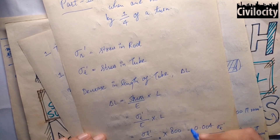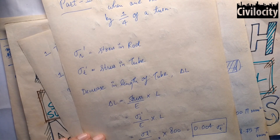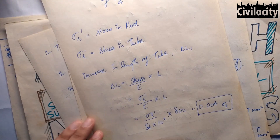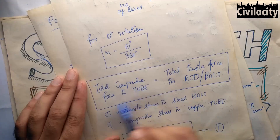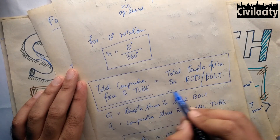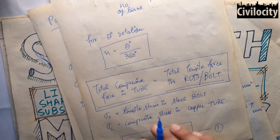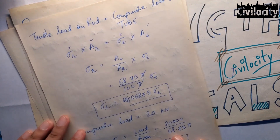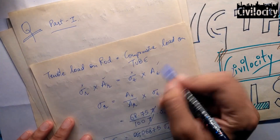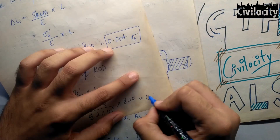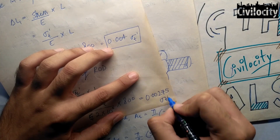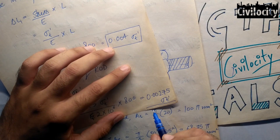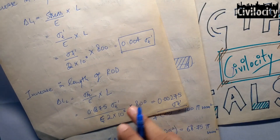Similarly, the increase in length of the rod equals (sigma_r_dash / E) times L. Since the tensile load in the rod still equals the compressive load in the tube, the relation sigma_r equals 0.6875 times sigma_t still holds, so sigma_r_dash equals 0.6875 times sigma_t_dash. Substituting the values gives the rod elongation as 0.6875 times sigma_t_dash times 800 divided by 2 times 10 to the power 5, which equals 0.00275 times sigma_t_dash.